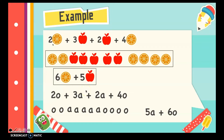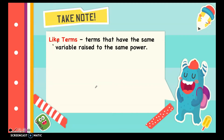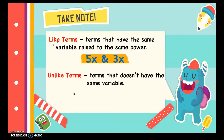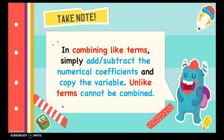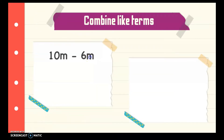In an expression, only like terms can be combined. We combine like terms to simplify algebraic expressions so we can work with them more easily. We can't combine unlike terms because it is like trying to add apples and oranges. Like terms are terms that have the same variable raised to the same power — for example, 5x and 3x. Unlike terms are terms that don't have the same variable — for example, 5x, 3y, and 2x squared. In combining like terms, we simply add or subtract the numerical coefficients and copy the variable.